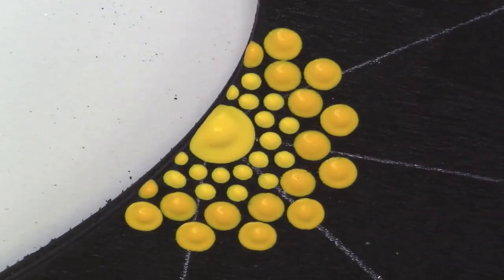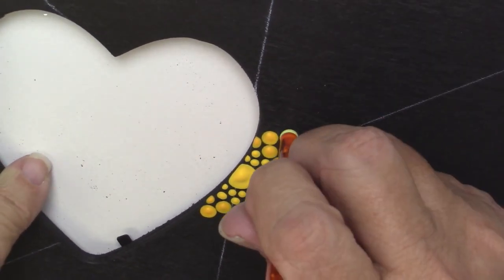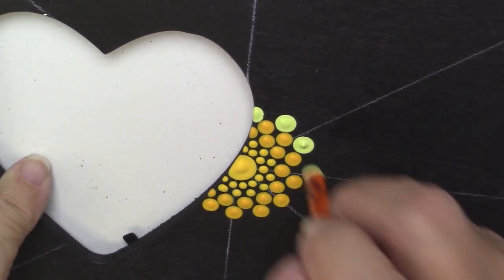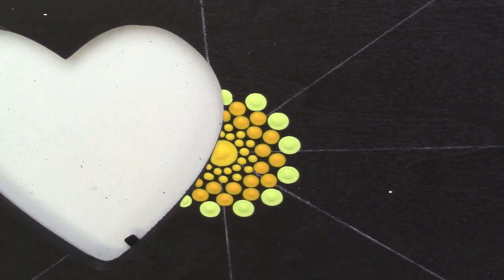Now I'm using a mixture of citron green and titanium white to get a light citron green and I'm using my number I crochet hook and just putting a couple rows of that down.